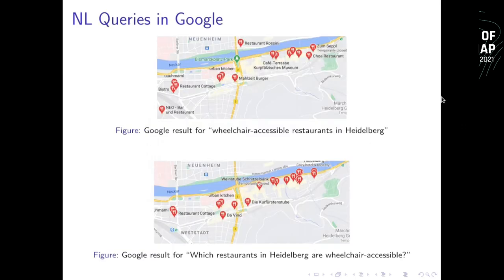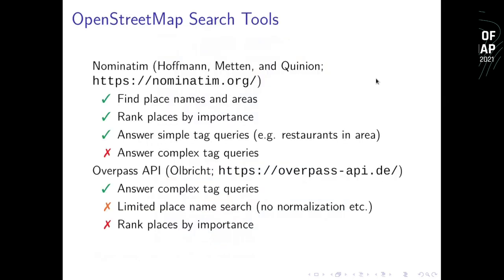In Google, we can already ask questions like wheelchair accessible restaurants in Heidelberg, or which restaurants in Heidelberg are wheelchair accessible, and we get results. We want the same in OpenStreetMap. I'm going to use two search tools: Nominatim, which is a geocoder that can select places and areas by their names and rank them by importance — so Paris is probably Paris in France, not some obscure town in the US Midwest. It can answer simple tag queries but cannot answer complex ones involving unions and intersections, like wheelchair accessible restaurants.